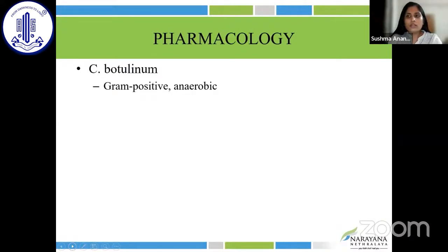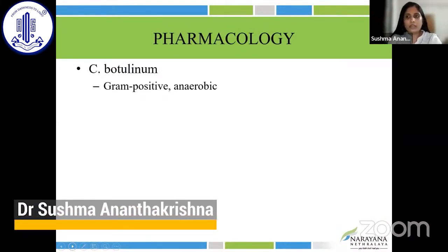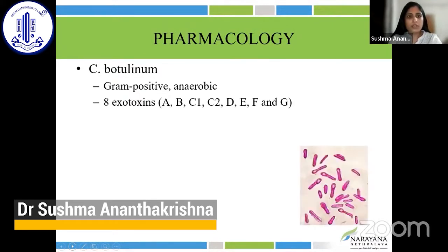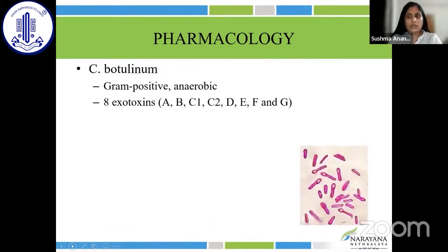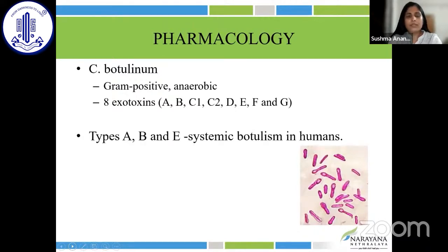Botulinum toxin is expressed by the gram-positive anaerobic organism Clostridium botulinum. It expresses eight exotoxins: A, B, C1, C2, D, E, F, and G. Types A, B, and E cause systemic botulism in humans. When potency was measured, type A is the most potent, followed by type B and type F.